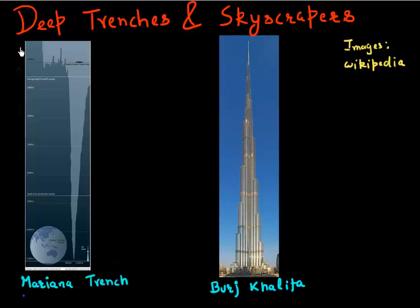Let's start with some fun facts. I'm showing here a cartoon of the Mariana Trench. As some of you might know, it's the deepest trench on the planet, and it's really deep. The Mariana Trench is approximately 2,550 kilometers deep.